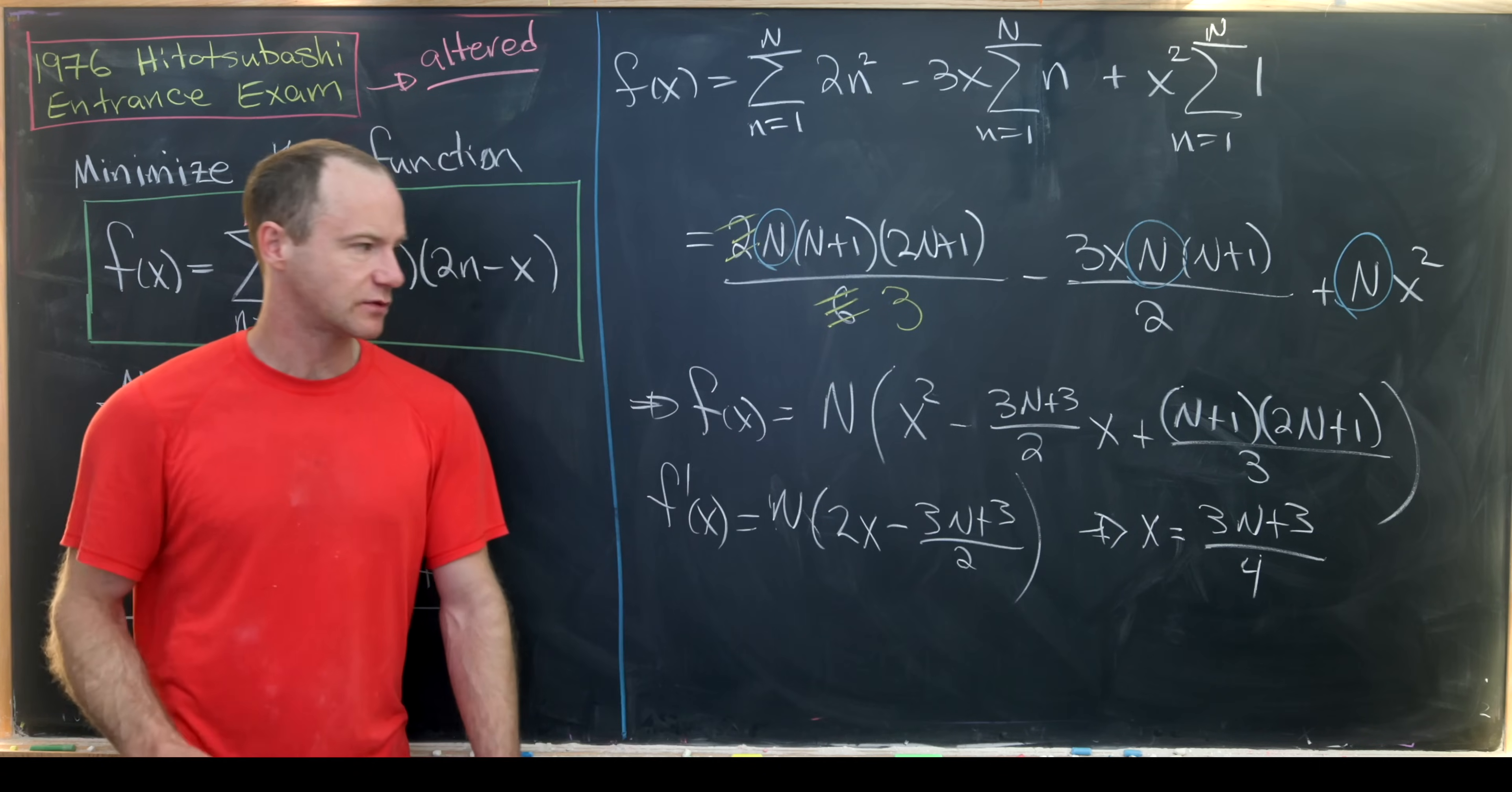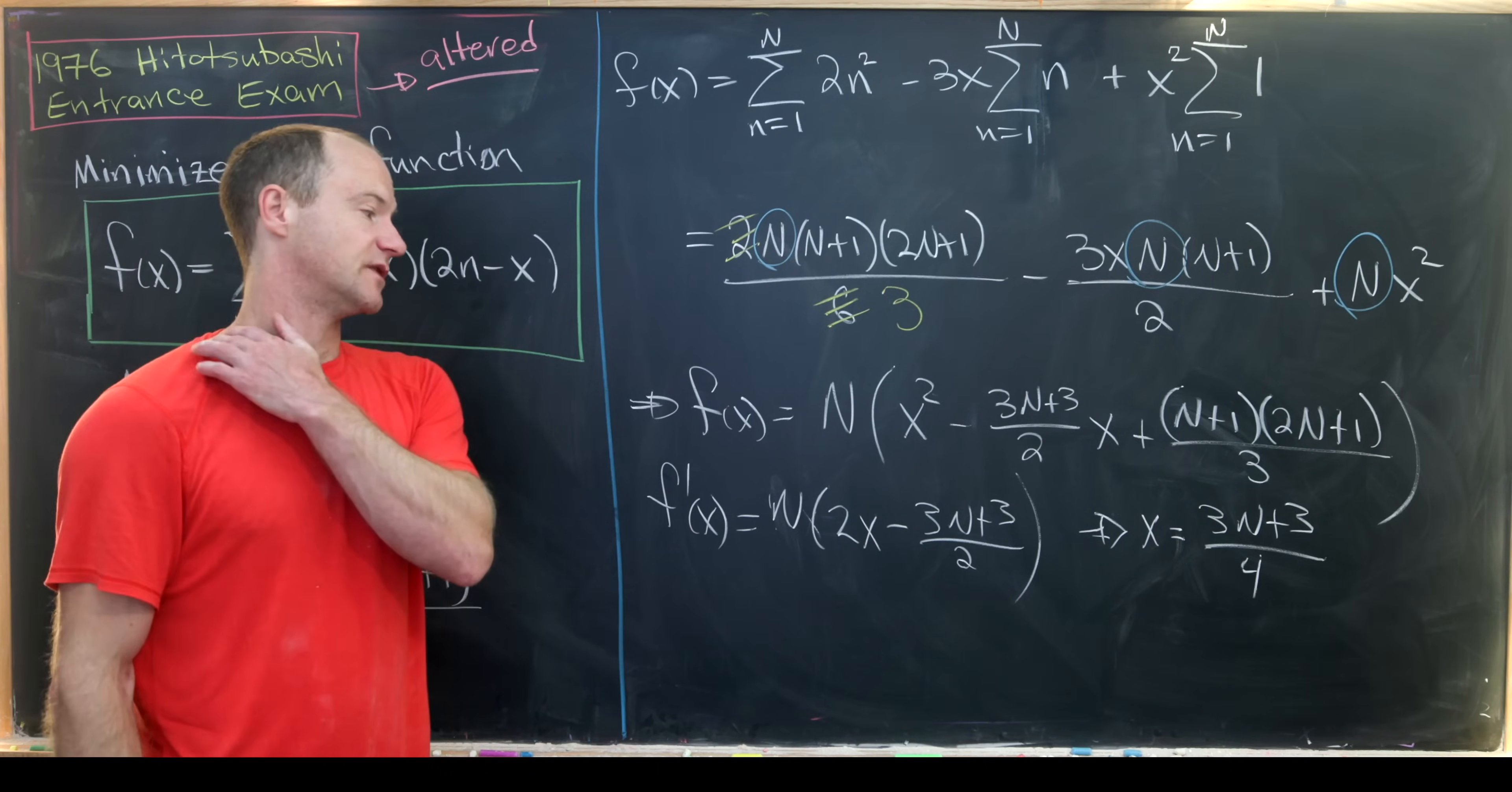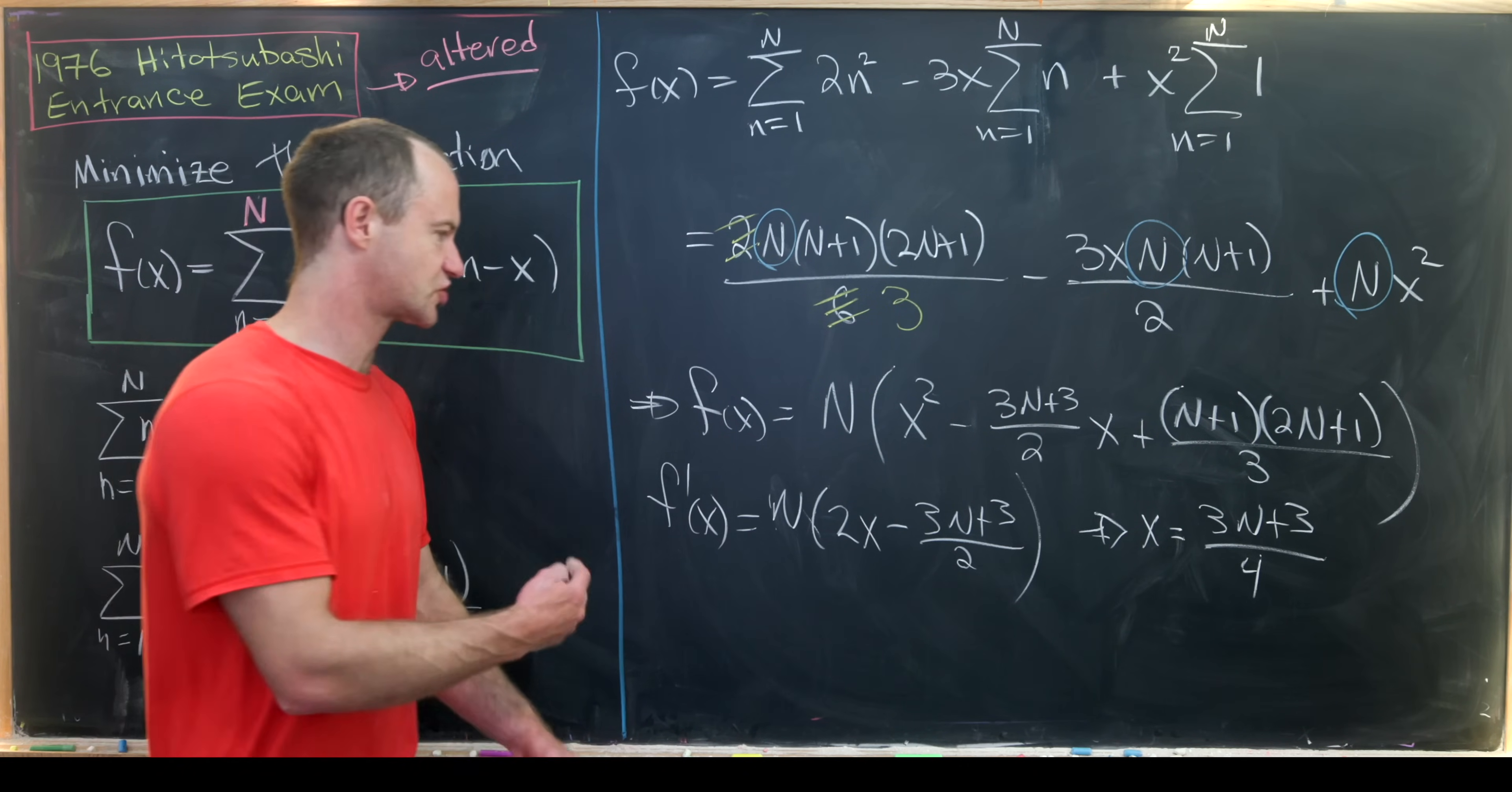Now notice when N was equal to 11 that numerator was 33 plus 3 which is 36 over 4 which is 9. So that's what gave us the solution in that case. But in this current setup we may not have the same structure.